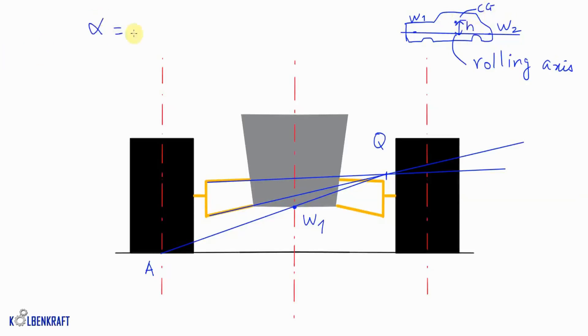So rolling angle can be given as MAH divided by phi front plus phi rear. This phi is basically rolling spring rate.